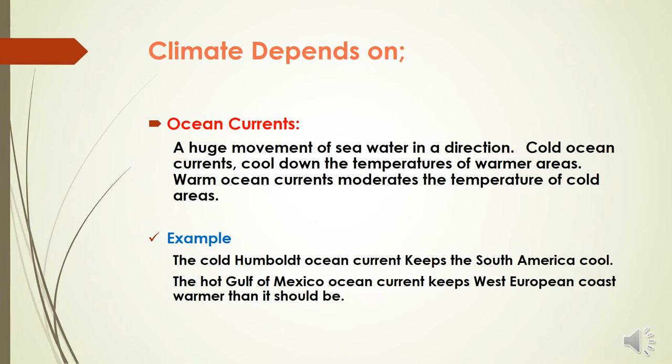An ocean current is a huge movement of sea water in a direction. Cold ocean currents cool down the temperatures of warmer areas, whereas warm ocean currents moderate the temperature of cold areas. For example, the cold Humboldt ocean current keeps South America cool, and the warm current of the Gulf of Mexico keeps the West European coast warmer than it should be.